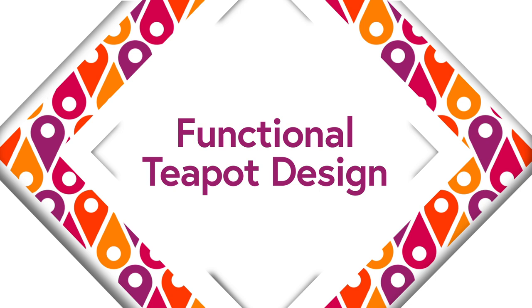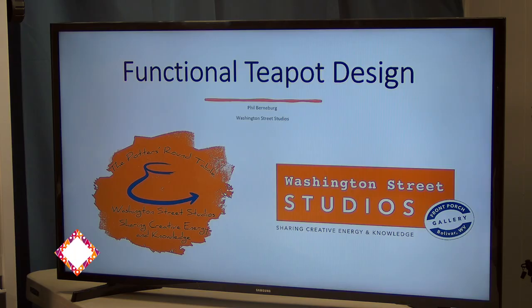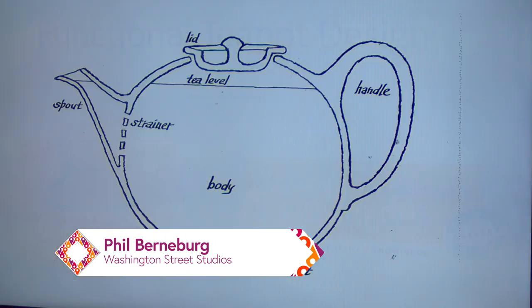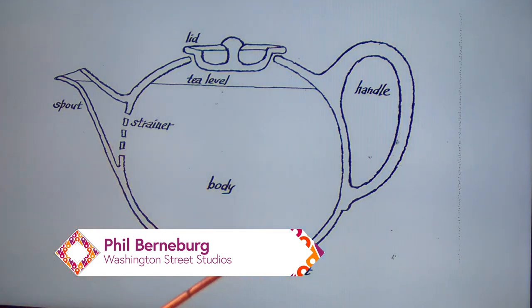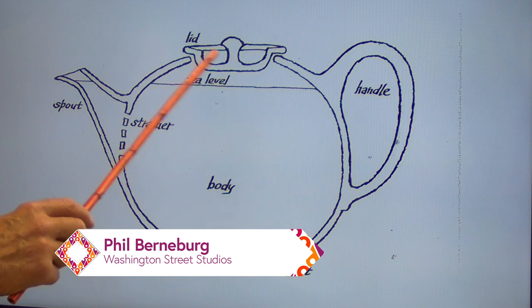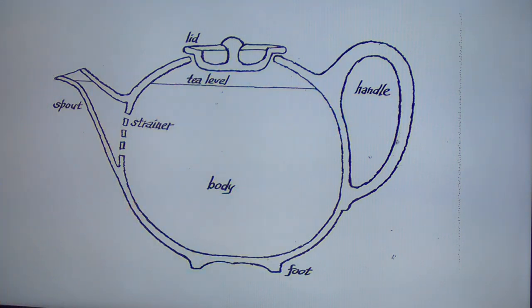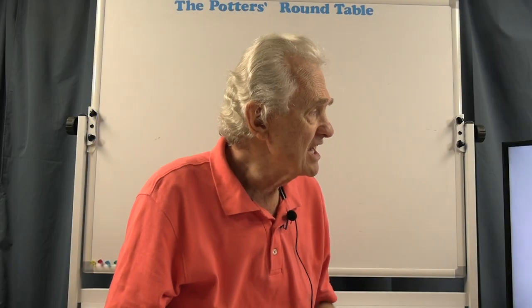Functional teapot design — let's talk about the components of a teapot. We have a diagram here that shows the basic components: the body with the foot, the lid, the handle, the spout, and possibly a strainer. We'll be talking about these in a bit.